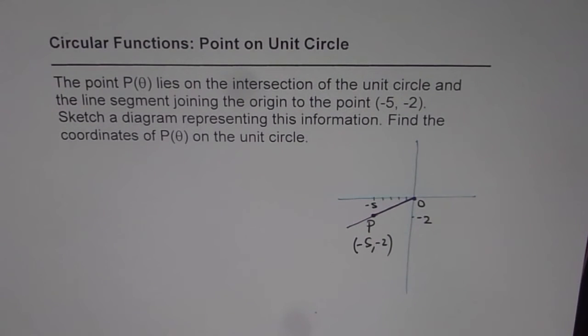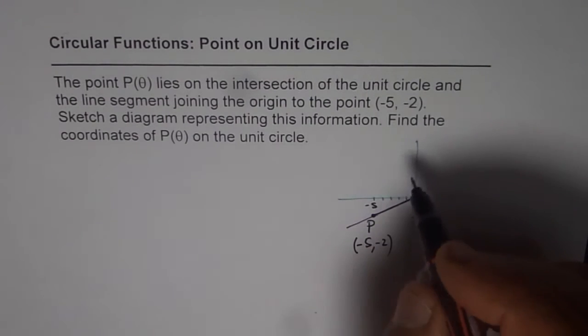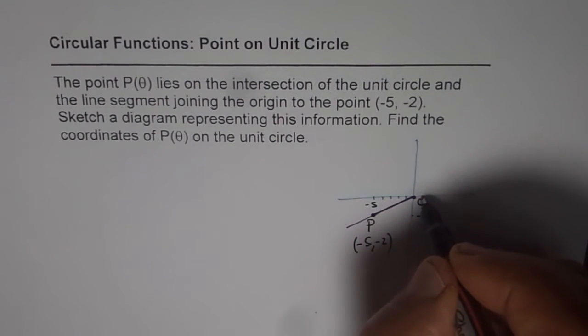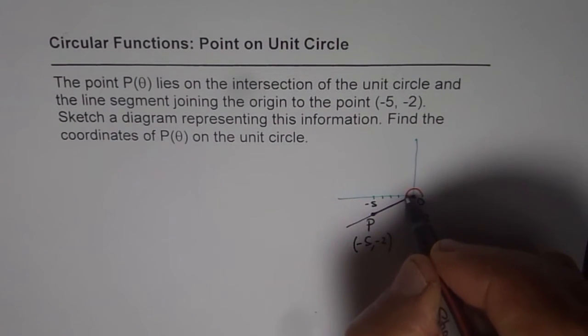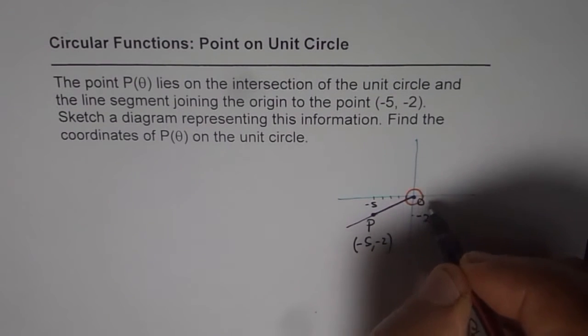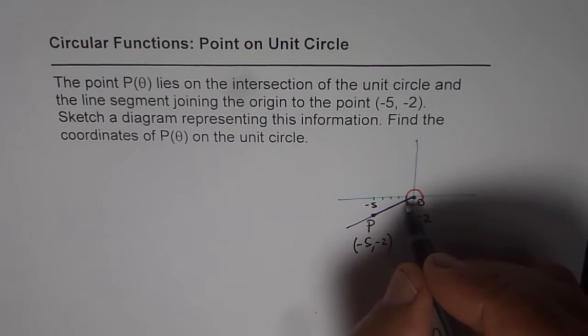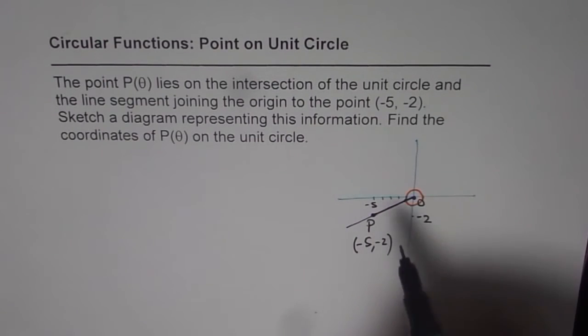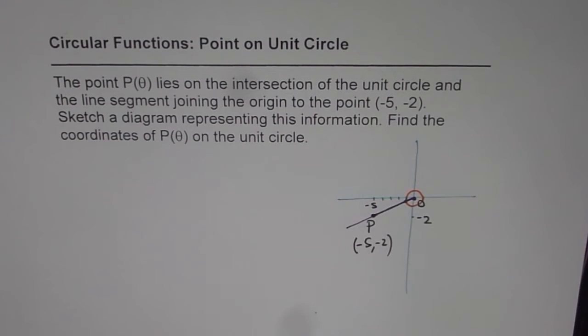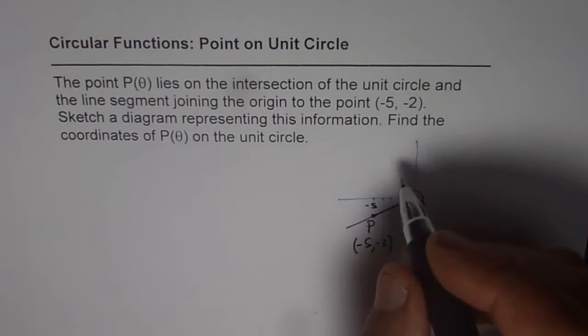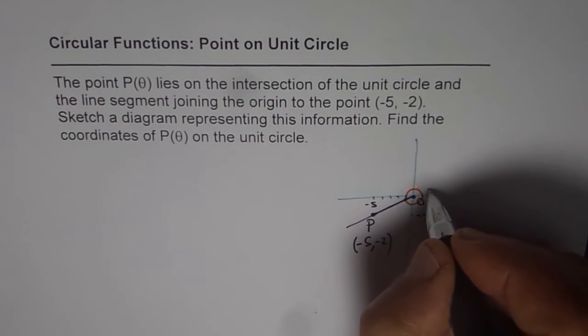So we need to find the coordinates of this point which lies on the unit circle and on the line segment OP. So that point we are calling as P(θ). So θ is this angle, the principle angle.